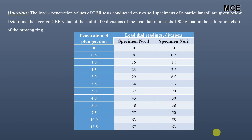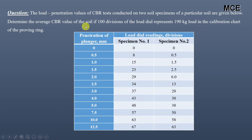Hello and welcome back to the Master Civil Engineering channel. In this video we will learn how to find the mean CBR value of a soil sample. The question states that the load penetration values of CBR tests conducted on two soil specimens are given, and we must find the average CBR value if 100 divisions of the load dial represents 190 kg in the calibration chart of the proving rig.